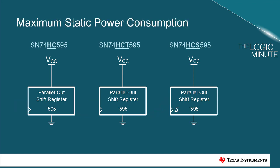Both the HC and HCT family devices have low power consumption with up to 80 microamps maximum static ICC across temperature. The newer technology of the HCS family allows it to draw only 2 microamps for the same function.